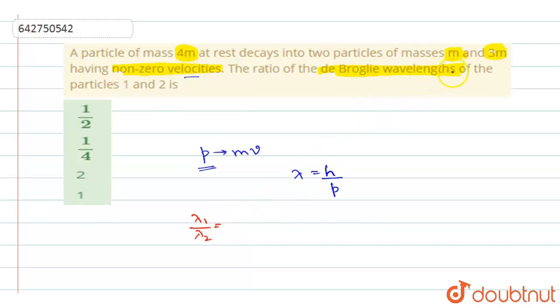So the masses are different, but when they are moving, when they have the velocities, according to the conservation of linear momentum, both the particles will have equal and opposite momentum.